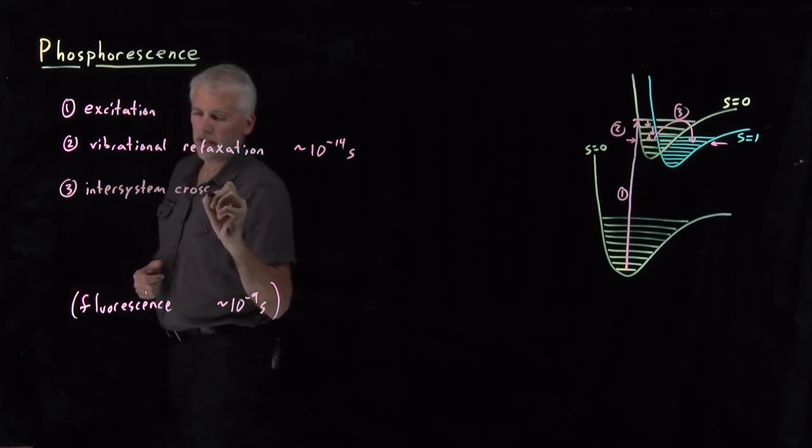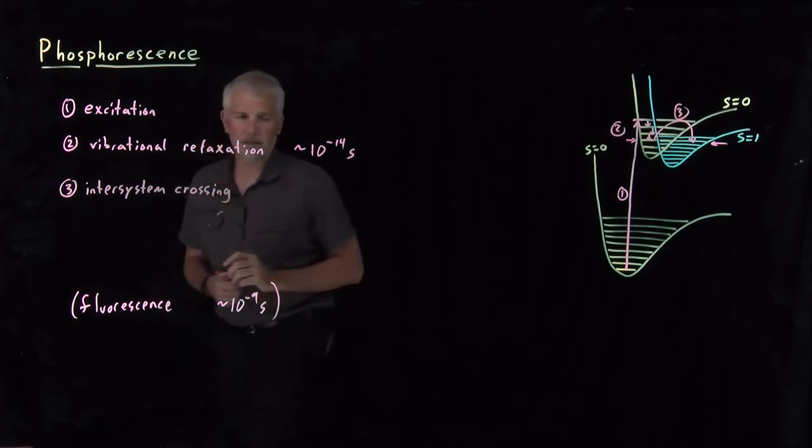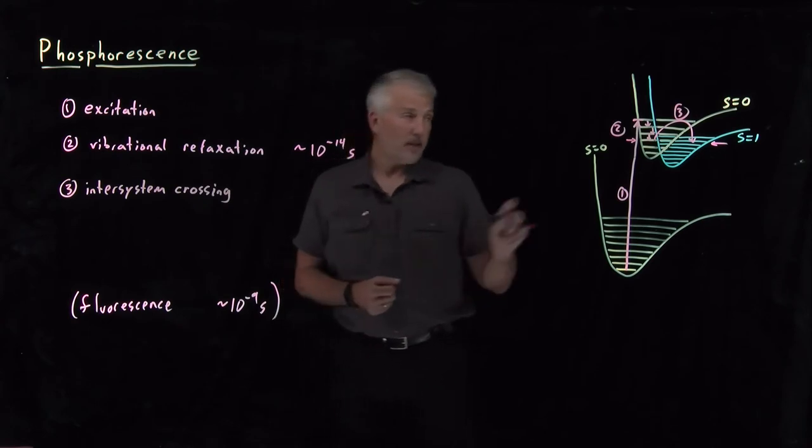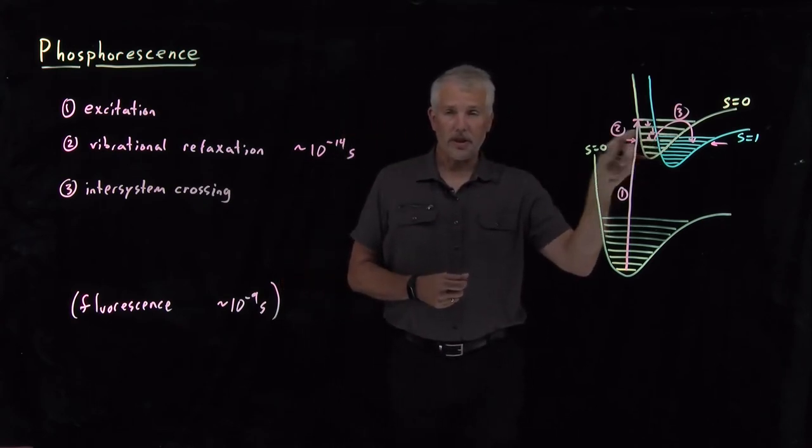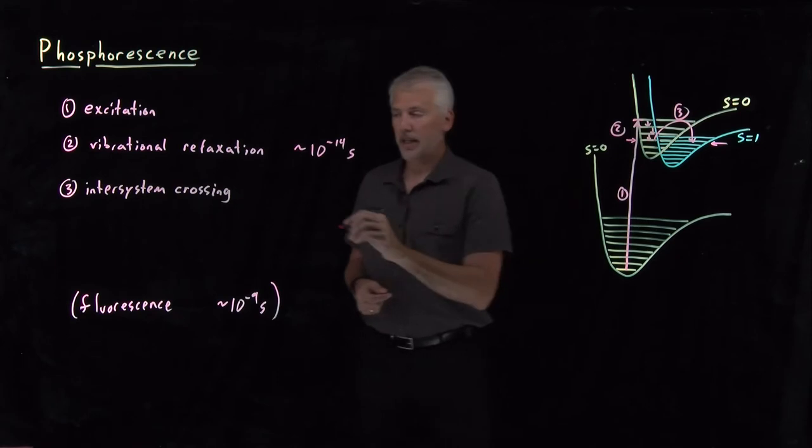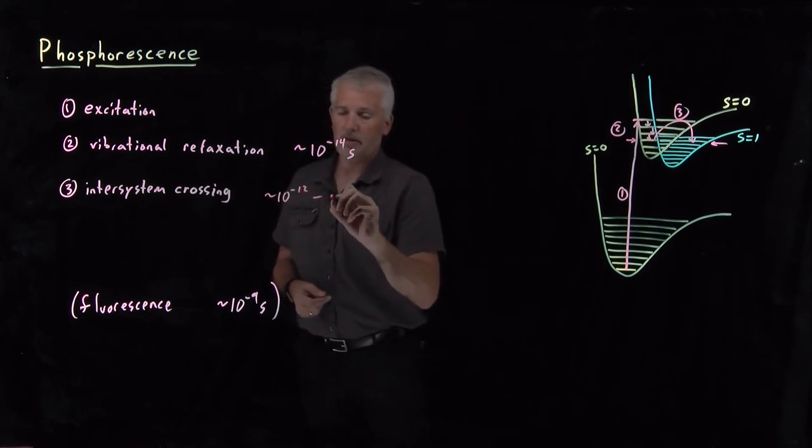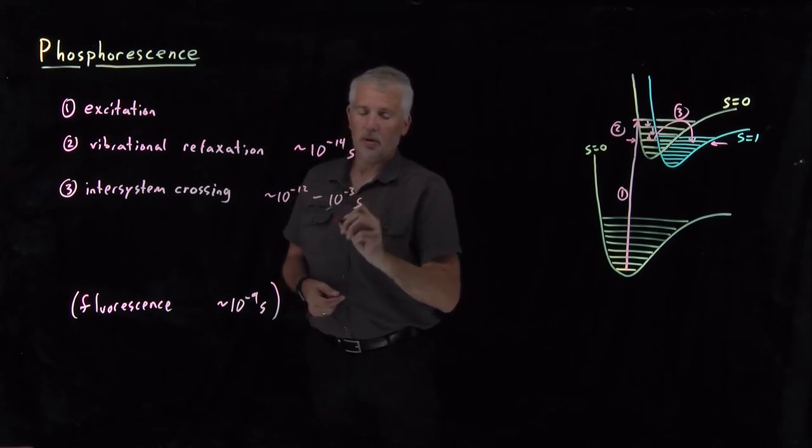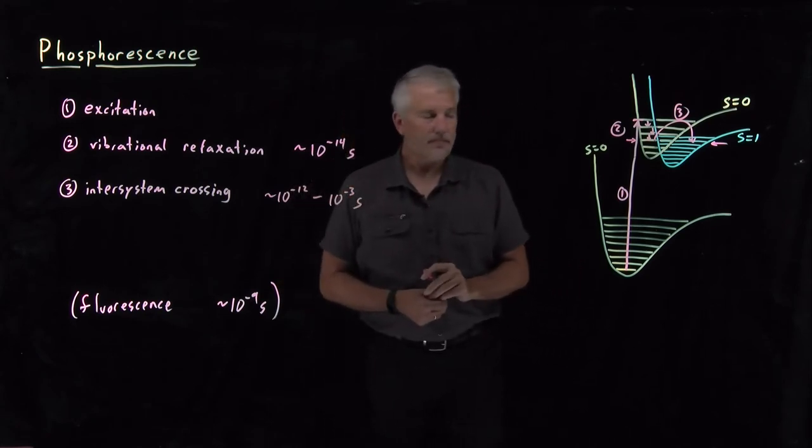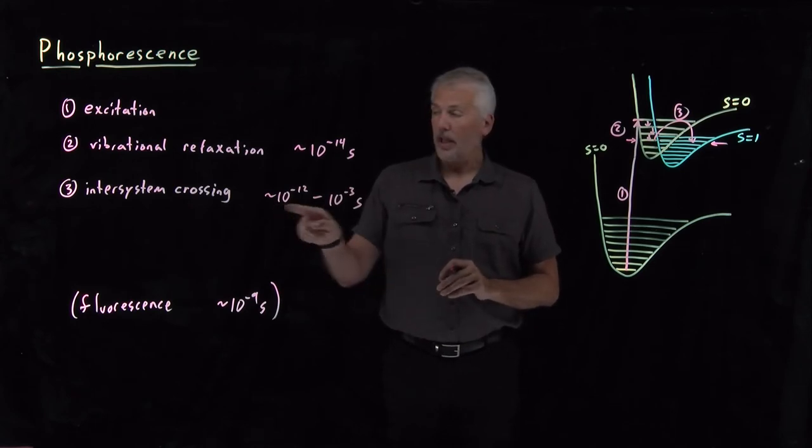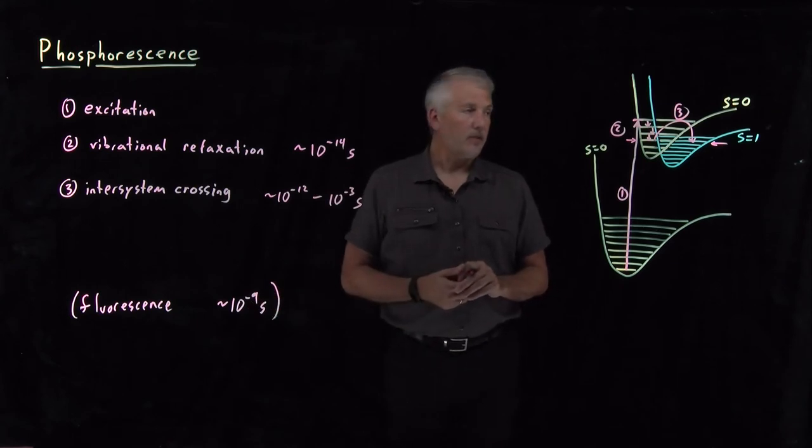Inter-system crossing is a key step in this phosphorescence process. That can be fast or slow. It depends largely on the overlap between these energy levels. If there's a good overlap, it can happen very quickly, on the picosecond timescale, or it can happen quite slowly if there's not as good an overlap. It depends on the molecules we're talking about, how likely that inter-system crossing is. It's generally more rare than fluorescence.